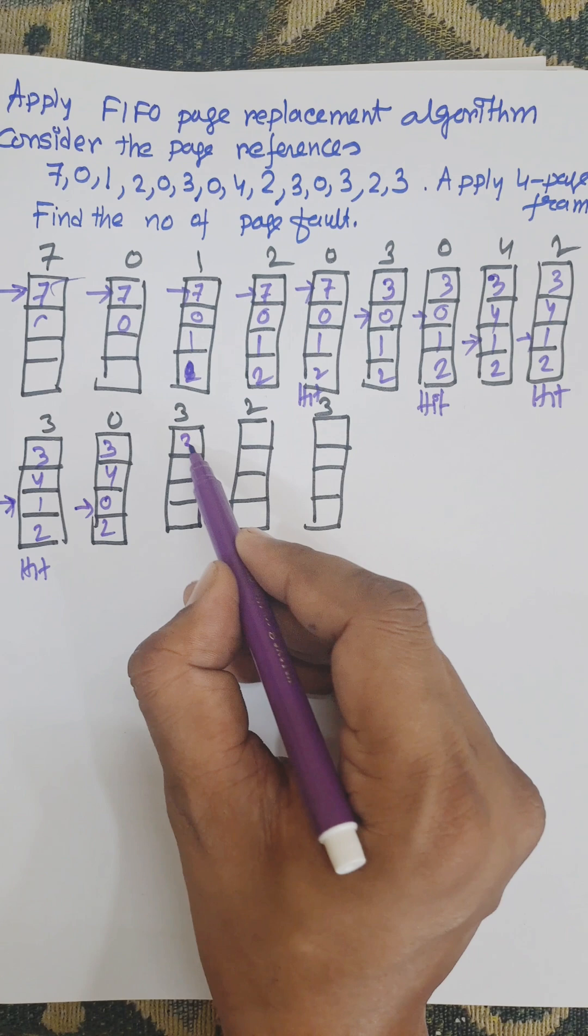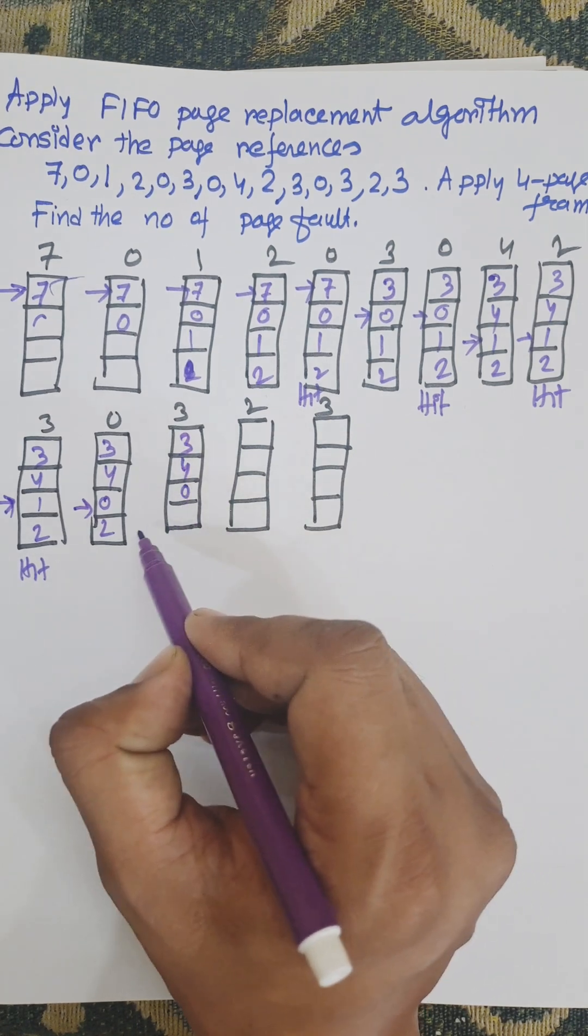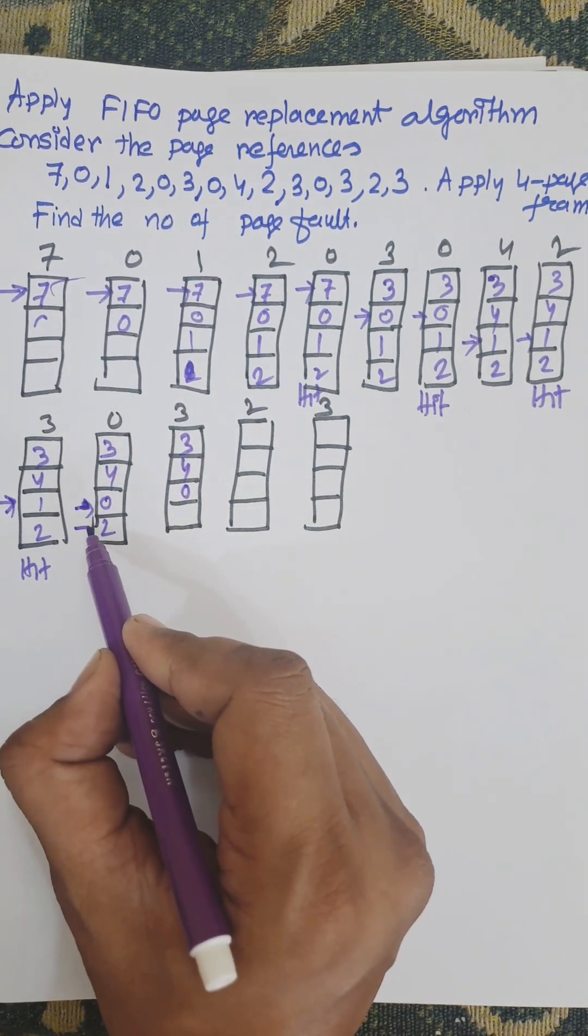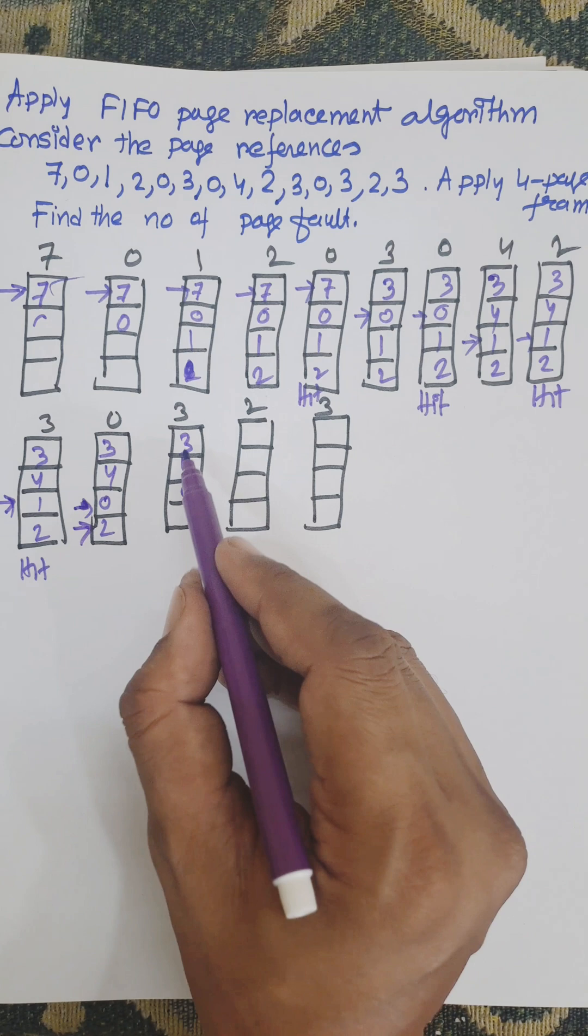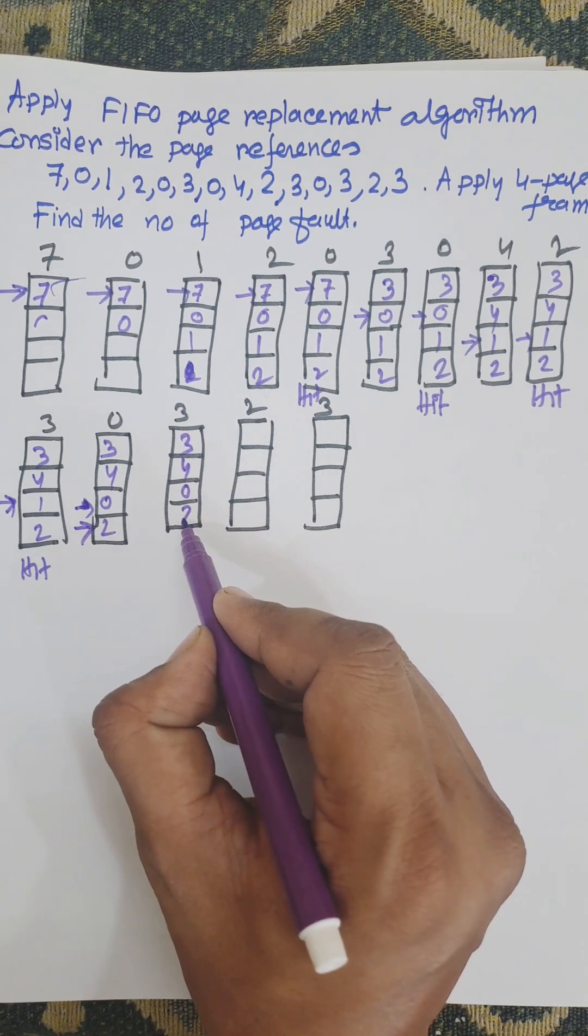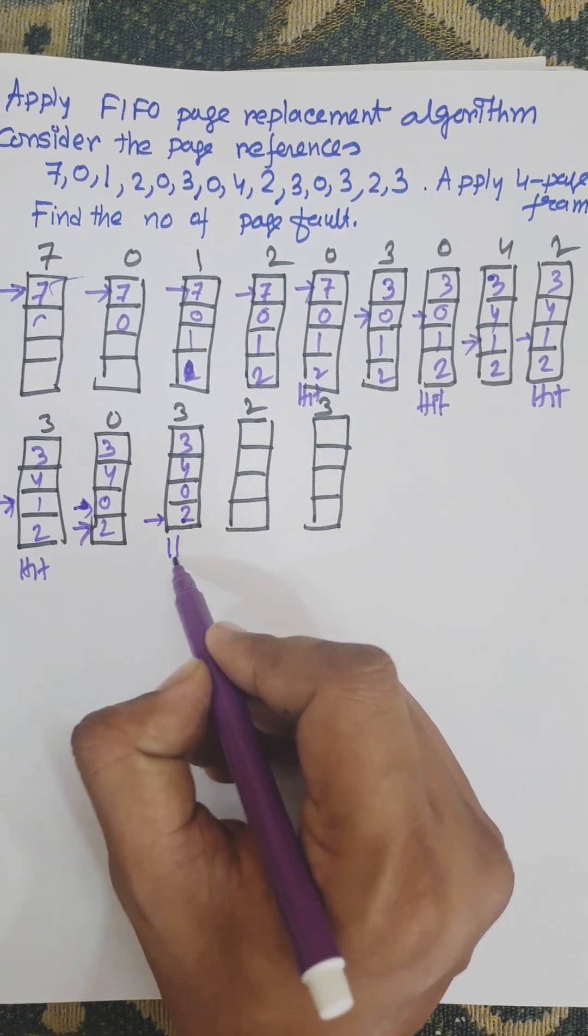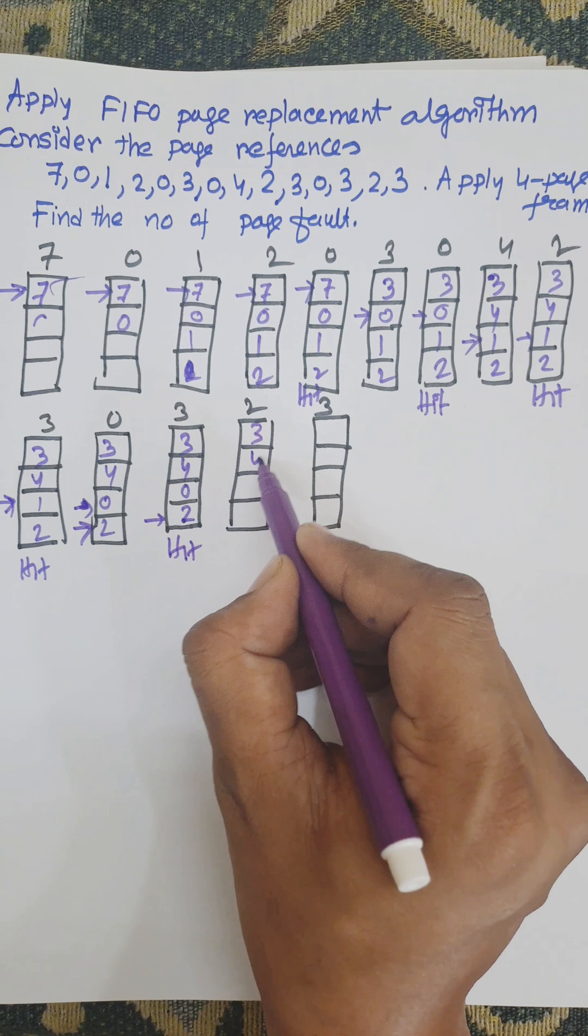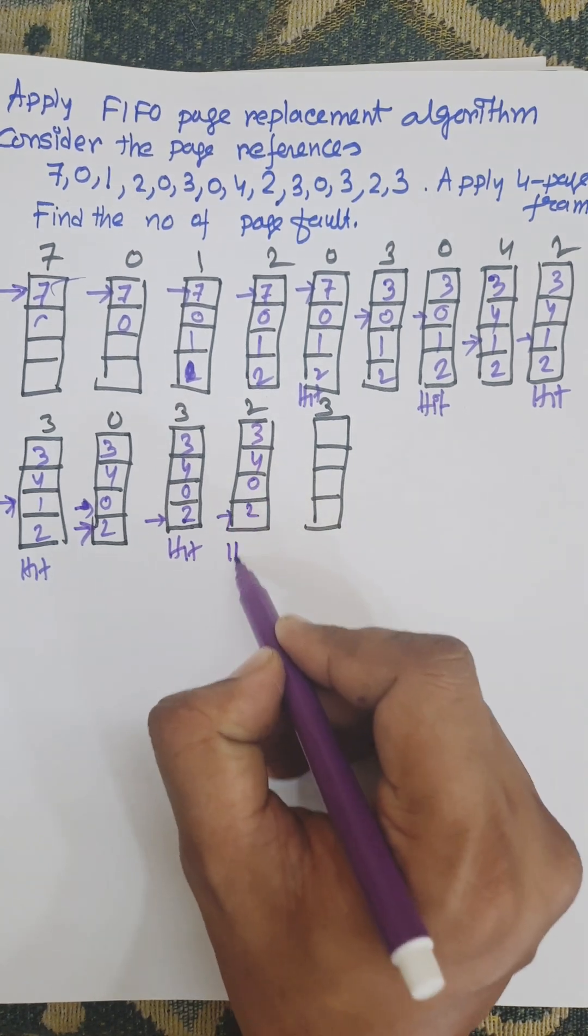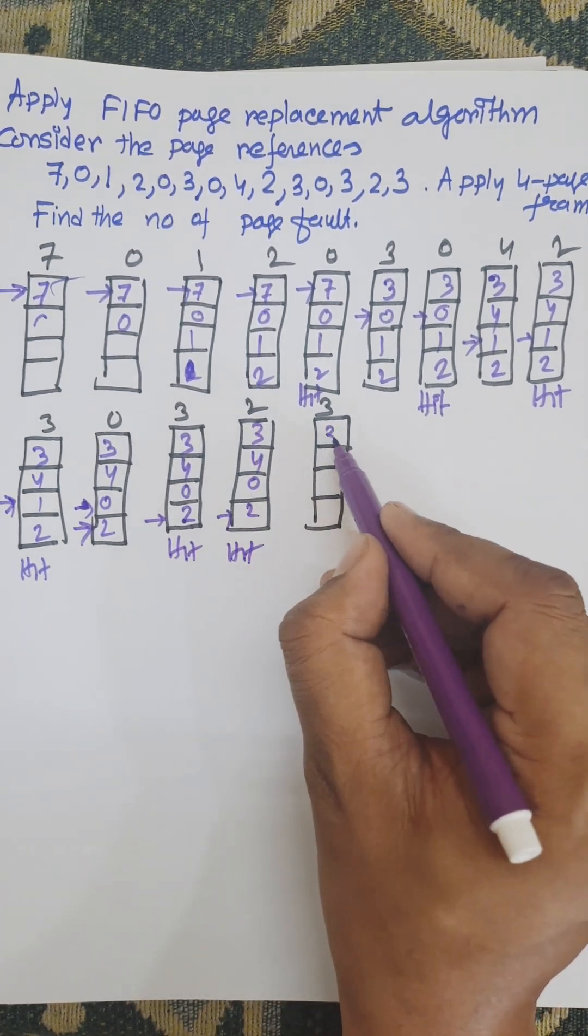Next, since 3 is available here, that is hit. Now the pointer is replaced to the next position, that is position 2. Now 3 is available, that is hit. Again hit. 2 is available, that is hit. And 3 is available, that is hit.